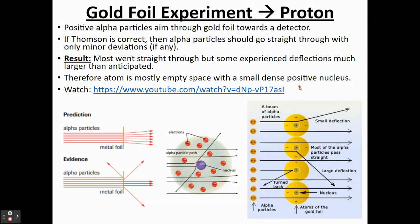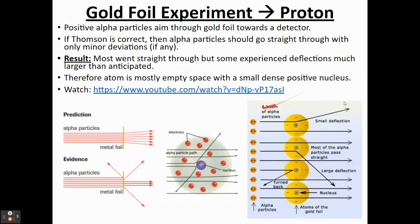If you zoom in and picture the gold foil sheet, most of the atom is empty space at this point, because most particles are flying through with no problem. But there are a few that are being deflected. What Rutherford was saying is that the atom is mostly empty space — that explains why most alpha particles go through — but there must be some small region in the atom that the alpha particles are bouncing into, and that little region is the positive charge.